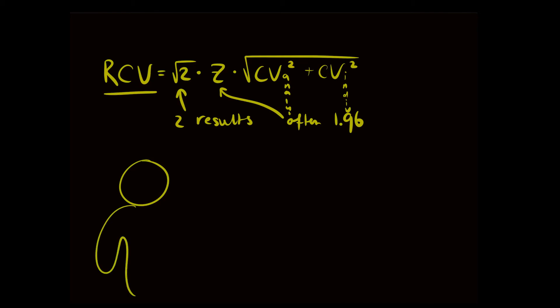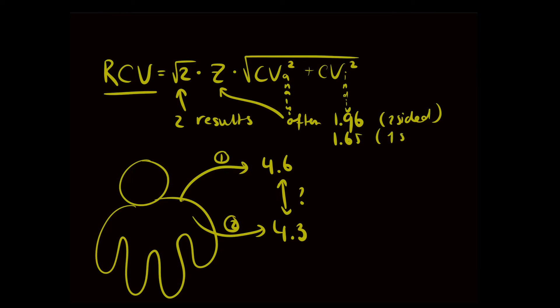Let's start with an example person. We have two results. The first result is 4.6, whereas the second result is 4.3. And we want to know whether the second result is significantly decreased due to therapy. For this, we could either use a two-sided confidence and a z-value of 1.96, or a one-sided confidence with a z-value of 1.65. In this case, we are only interested in a decrease, so the z-value of 1.65 will be the most appropriate in this situation.